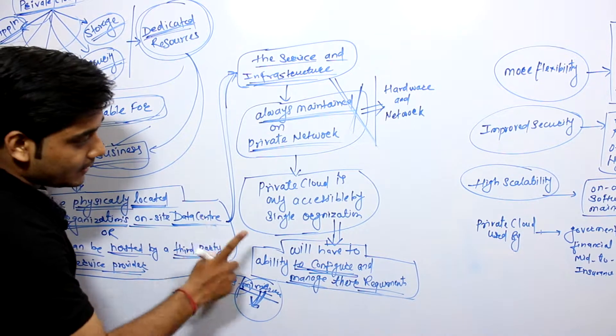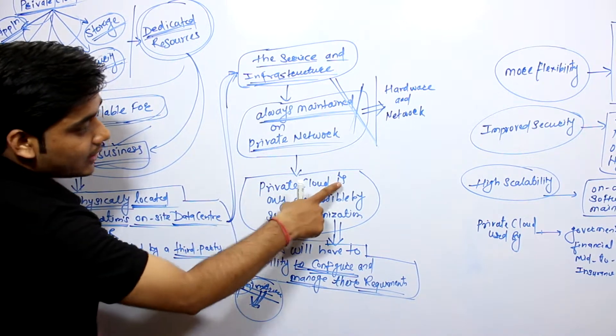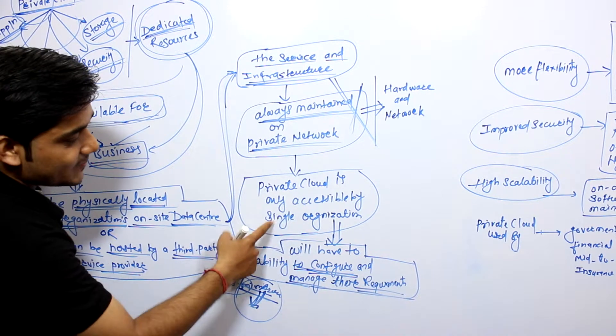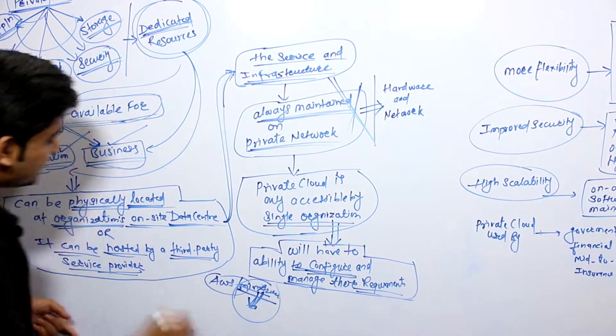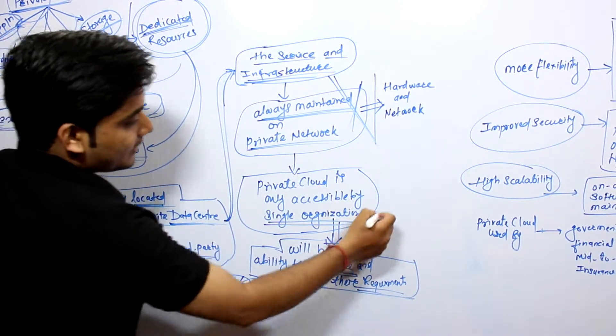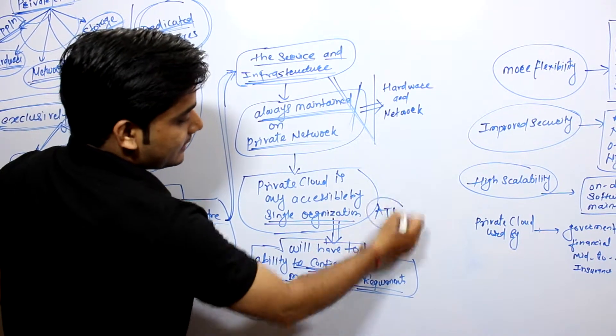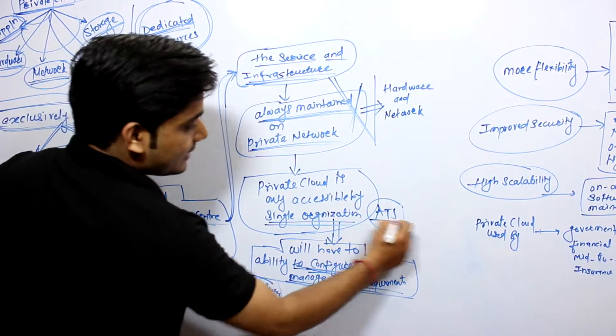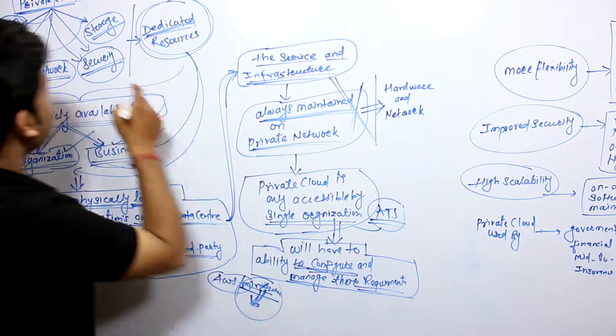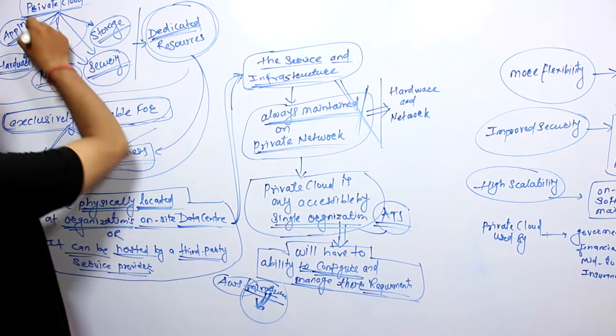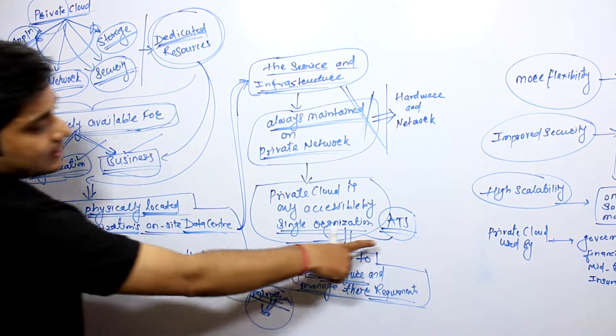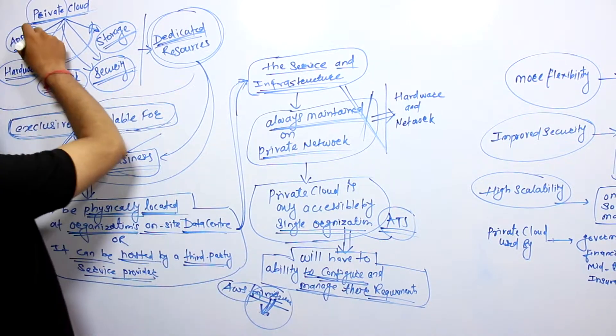But the private cloud is only accessible by single organization. Suppose an organization is ATS organization, so this organization just has access, that is, other than this organization cannot access it.